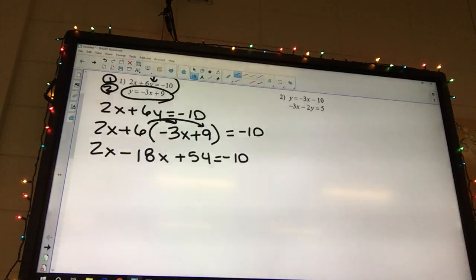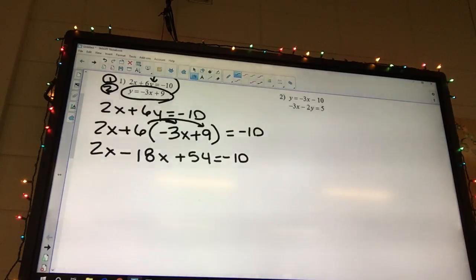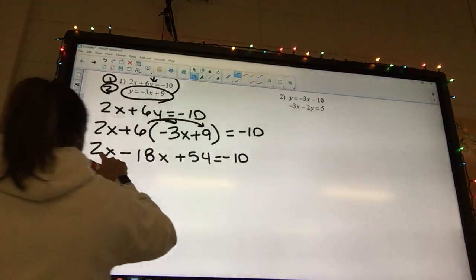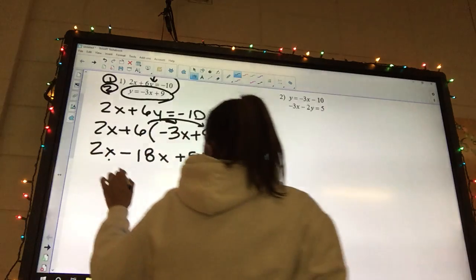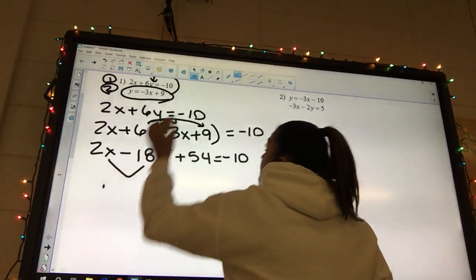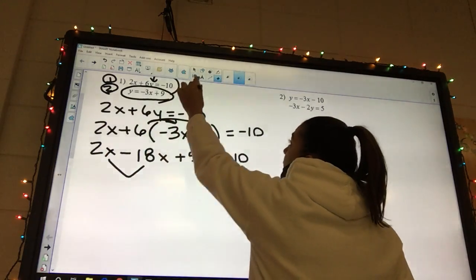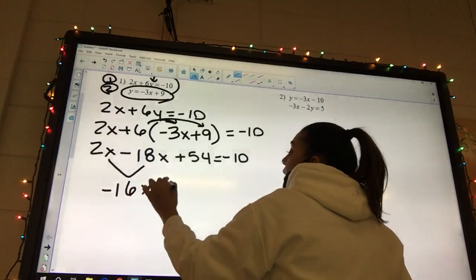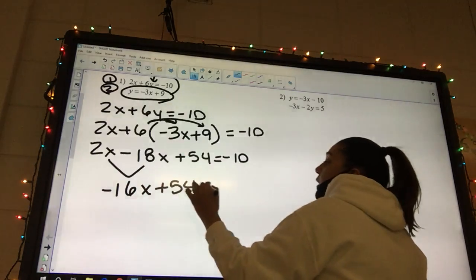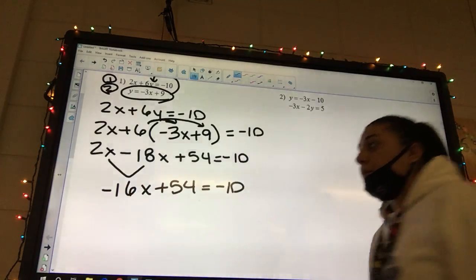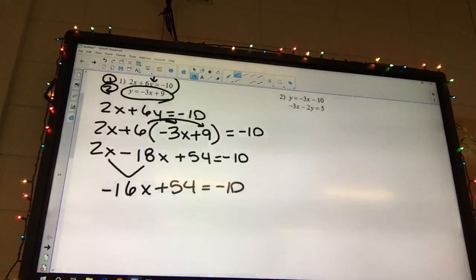And so we're going to have 2x minus 18x, and then 6 times 9 is going to be positive 54. Okay? What's our next step? When you get 54... 9 times 6. What's our next step? Yeah, we need to add our like terms. And so I can put this 2 and this 18 together to give me a negative 16x plus 54 equals negative 10.